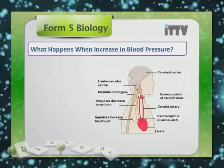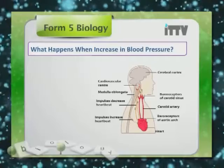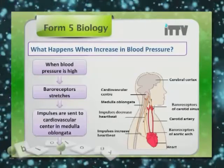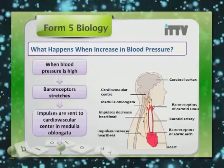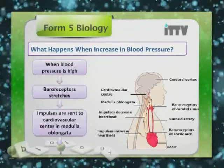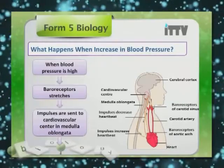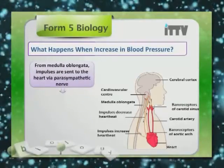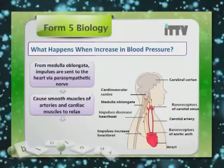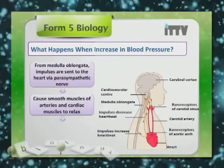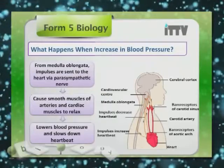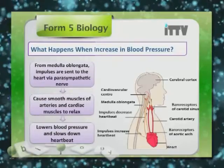When blood pressure is high, the baroreceptor stretches and impulses are sent to the cardiovascular centre in the medulla oblongata. From the medulla oblongata, impulses are sent to the heart via the parasympathetic nerve. This causes the smooth muscles of arteries and cardiac muscles to relax, which then lowers the blood pressure and slows down the heartbeat to normal.